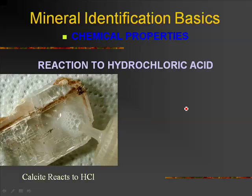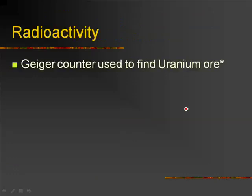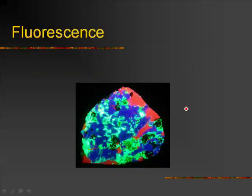Radioactivity — we're not going to be dealing with a lot of uranium ore, but a Geiger counter would help you find that uranium ore is radioactive. Fluorescence: some minerals looking perfectly normal in everyday light glow with wonderful colors in UV light.